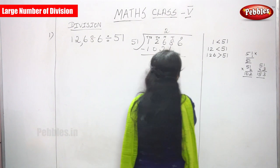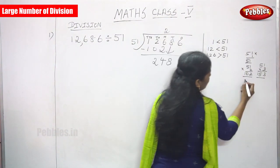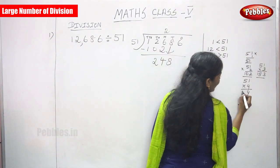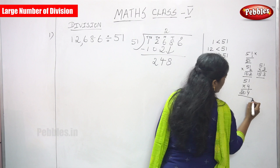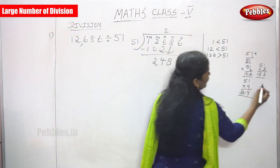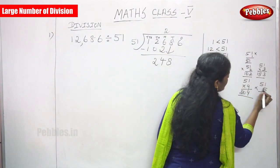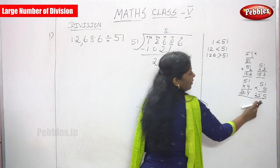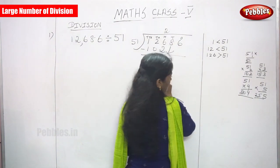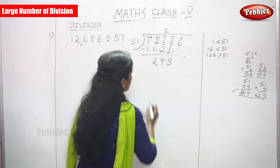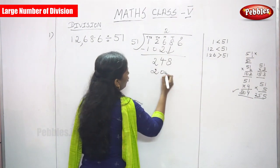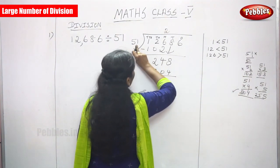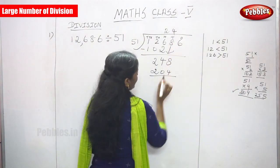Now we have 248. Build the table: 51 × 4 = 204. Try 51 × 5: 1 five is 5 and 5 fives are 25, giving 255. That is greater than 248, so 4 is the right choice. 51 × 4 = 204.